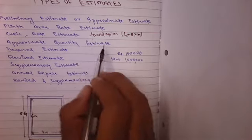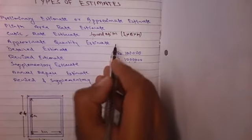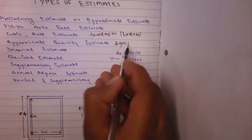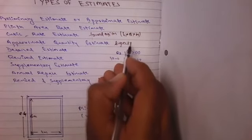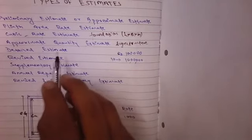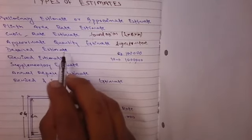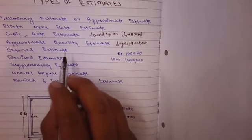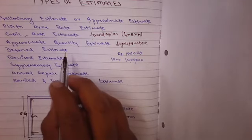Approximate quantity estimate: we will calculate this type of estimate in superstructures of building. Now detailed estimate...